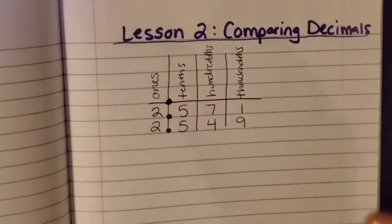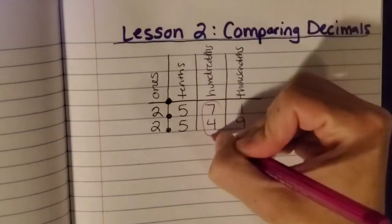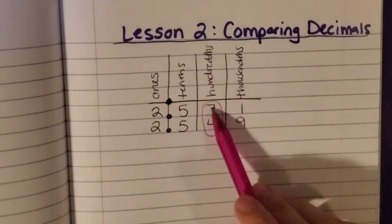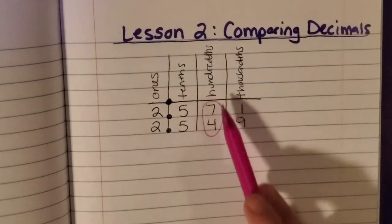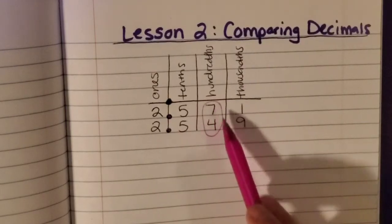Now here is where I see something a little different. Seven hundredths and four hundredths.